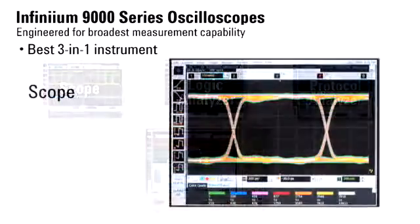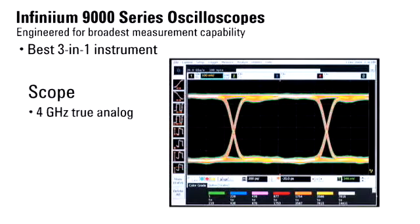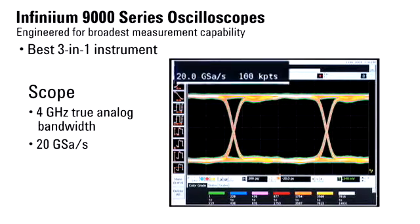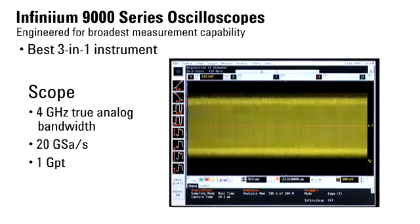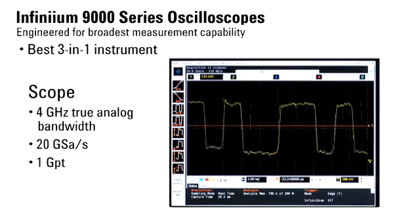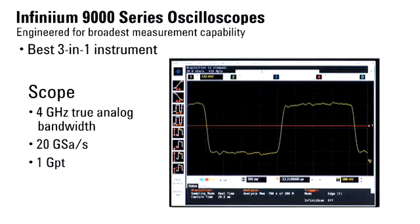Our scope offers true analog bandwidth up to 4 GHz with a sample rate of 20 Giga samples per second. With up to 1 Giga point of memory, capture long periods of time and zoom in for more detail.